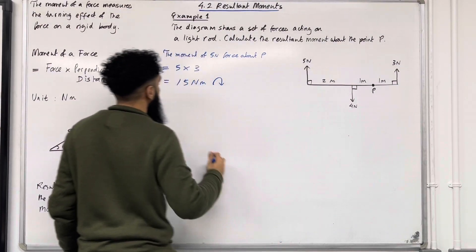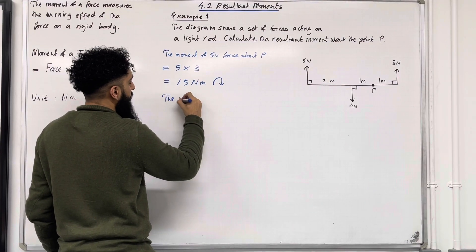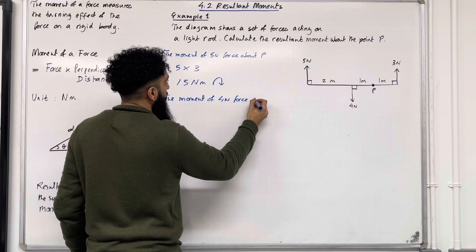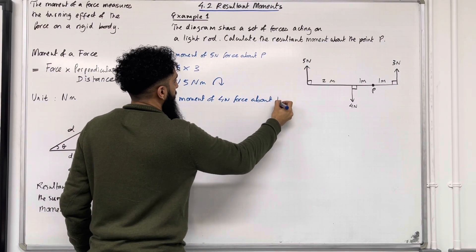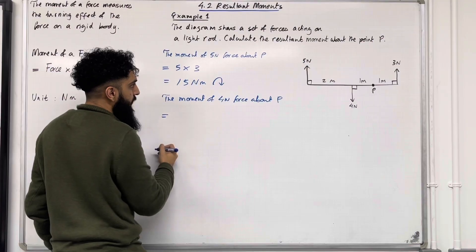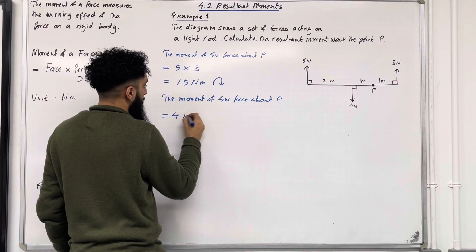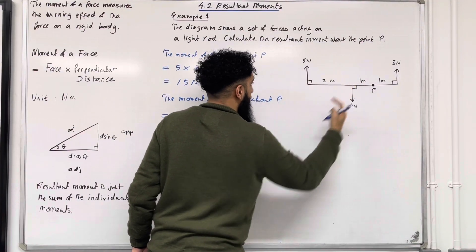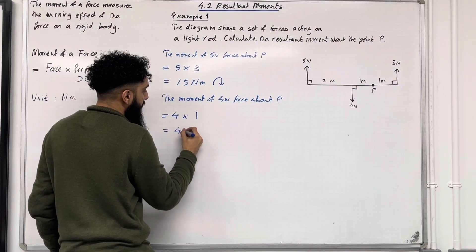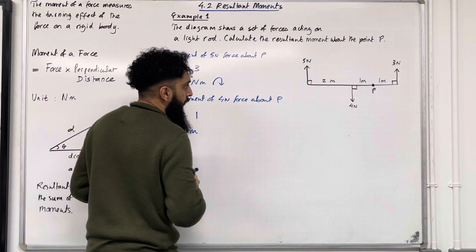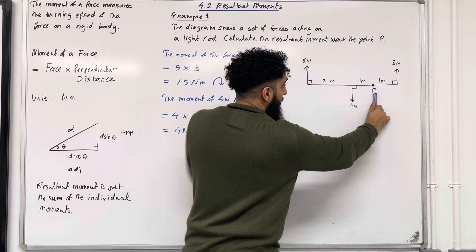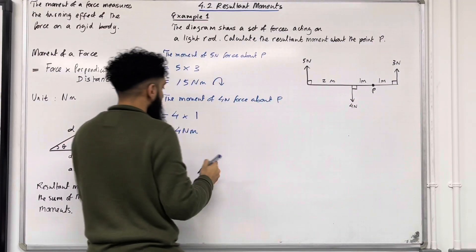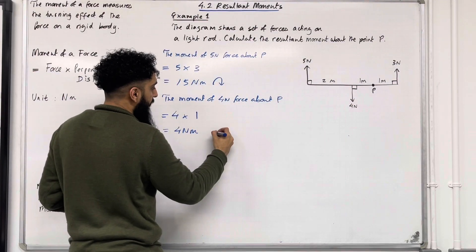Moving on to the 4 newton force: the moment of the 4 newton force about P equals 4 newtons multiplied by the perpendicular distance from P, which is 1. So 4 times 1 is 4 Newton meters. If I hold on to point P and apply this 4 newton force, it will take the entire body anti-clockwise. So we have 4 Newton meters going anti-clockwise.